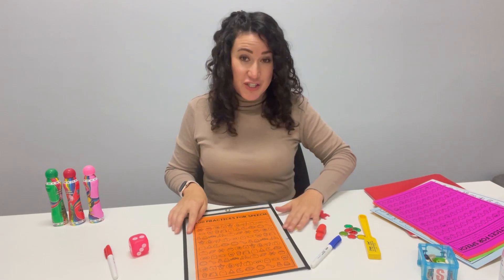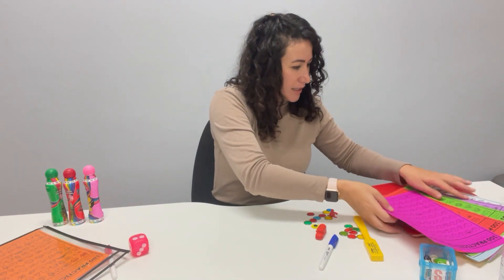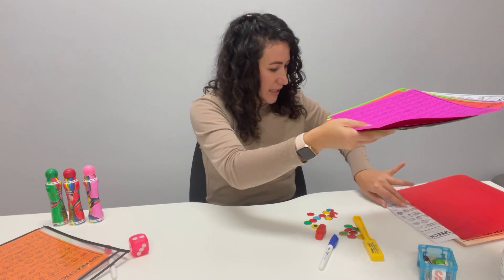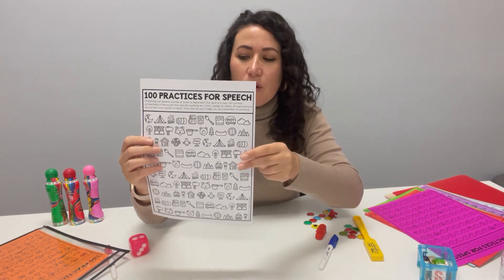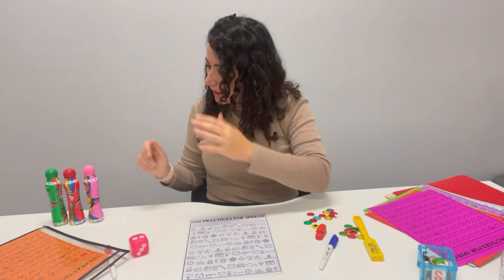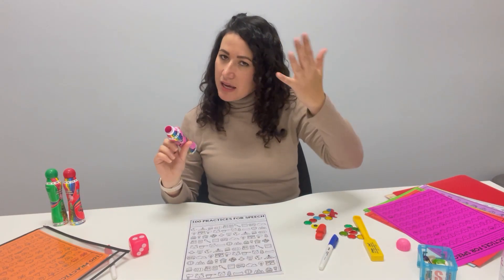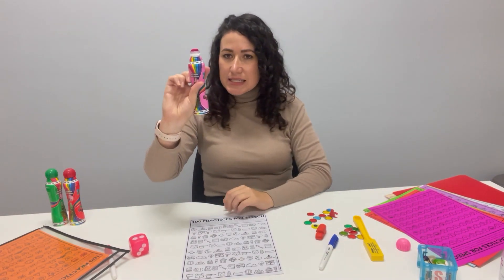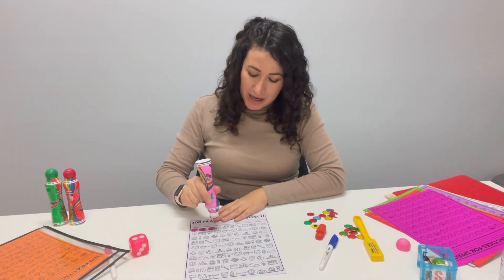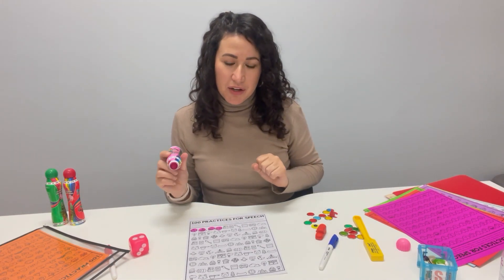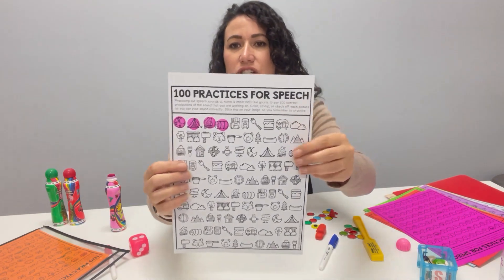My other favourite thing to do is to use dabbers. I'll grab this canopy-themed one. The child will say their practices and then they get the dabber and can dab how many times or how many words you heard. A really nice thing — I'll just show you how that shows up.